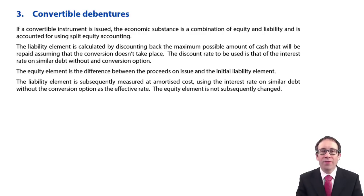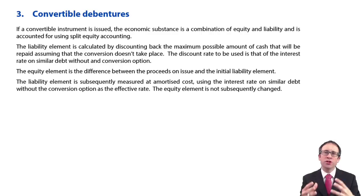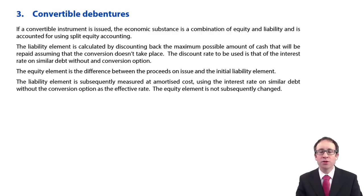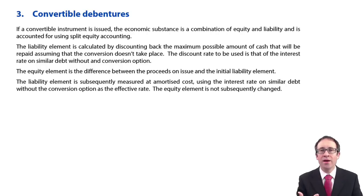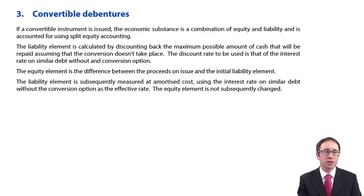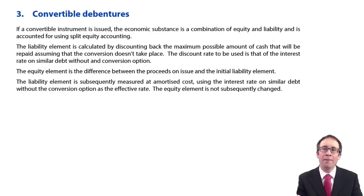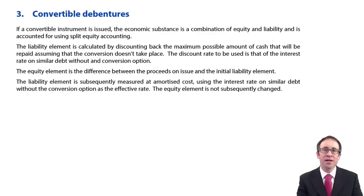Let's carry on with this chapter on financial instruments by looking at convertible debentures. We know what a debenture is — it's a way of a business being able to raise finance. When we issue debentures we debit the bank and credit a financial liability, and then that financial liability is treated at amortised cost.